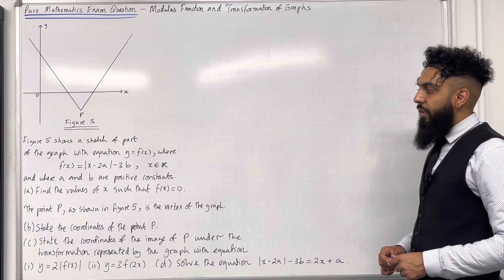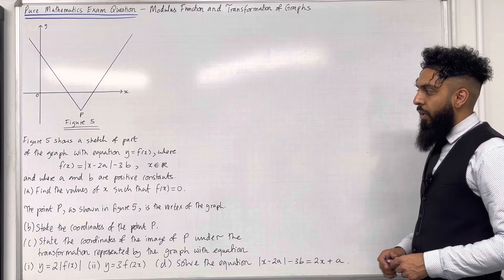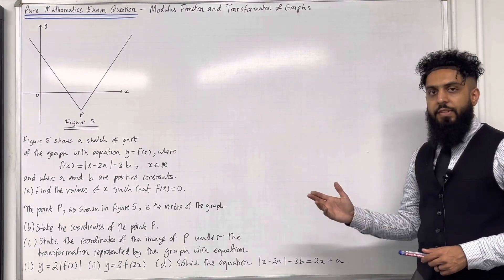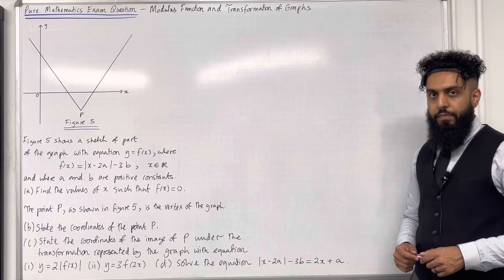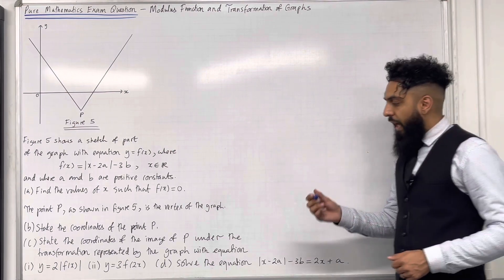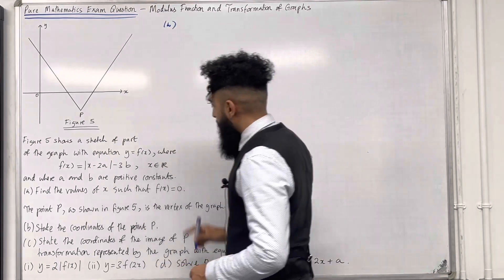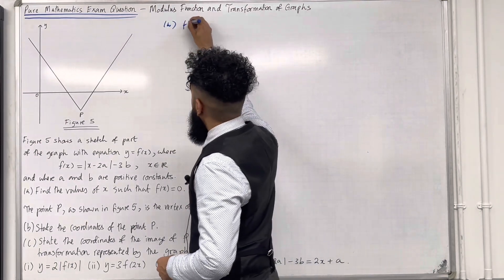Part A: find the values of x such that f(x) = 0. Please pause the video, have a go at part A; once you've got your complete solution, then play the video. Let's have a look at the solution to part A.